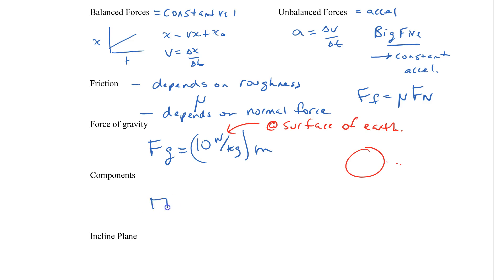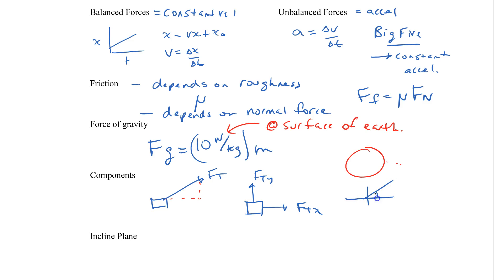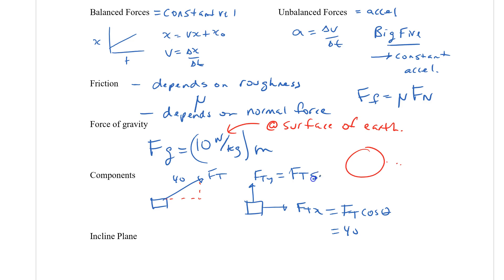We did a lot of work with components. If a force goes off at an angle, we can find how far it goes in the x and y directions. We can replace a tension force with its x and y components. If the angle is drawn off the x-axis, the x-component equals the original magnitude times cosine of the angle, and the y-component equals the magnitude times sine of the angle.